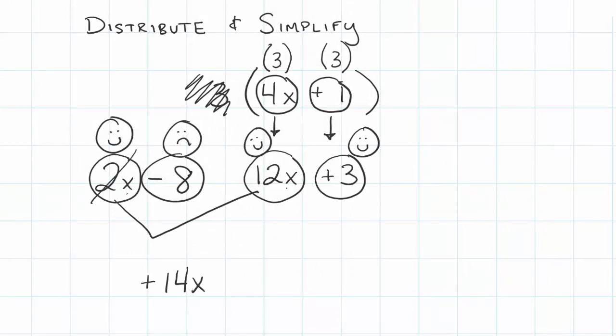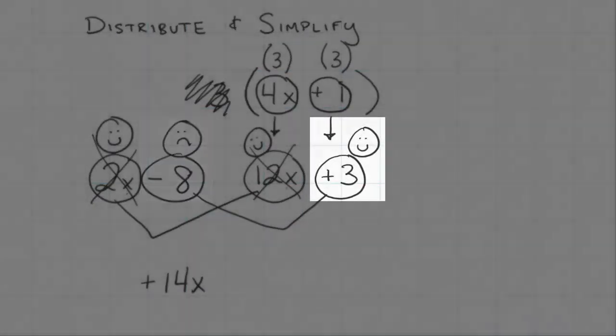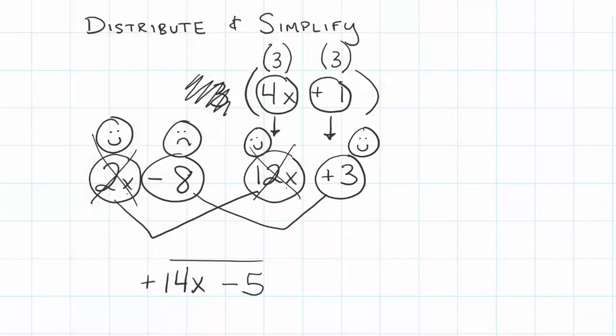I can go ahead and put together my numbers that are just numbers. They have no variable attached to them. I have more negatives than I do positives. There's 8 negatives and 3 positives so I'm going to have 5 negatives total. This is my simplified expression after I distribute it.